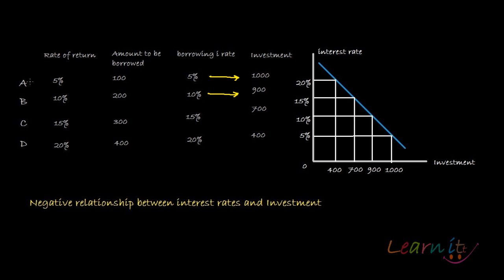At 15%, projects A and B are not feasible — they are giving a lesser rate of return than the cost. So I will borrow only for projects C and D, which is 700. At 20% rate of interest, neither projects A, B, nor C are feasible. I'll borrow only for project D, which is 400. What you have seen is that when interest rates are going up, investment is falling.